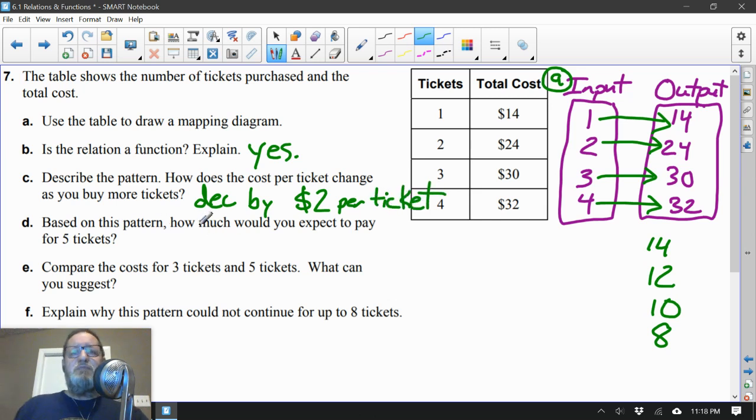Based on this pattern, how much would you pay for five tickets? Well, we can just keep our table going here. So we'd have 5 and 6. So if we continue this down, $8 per ticket. So this would be $6 per ticket for here. Five times 6 is 30. Oh wait, I guess we don't have to go to 6, do we? Because they just said for five tickets. So there we go. Five tickets would be $30. Because that would go down two more dollars per ticket, which would be 6. And 6 times 5 is 30.